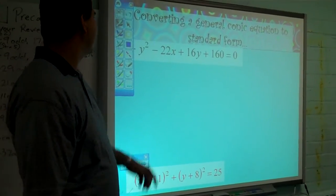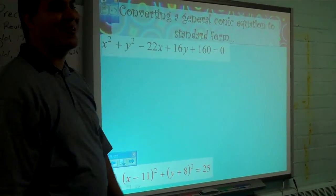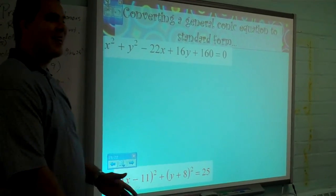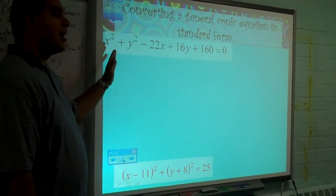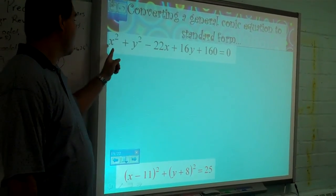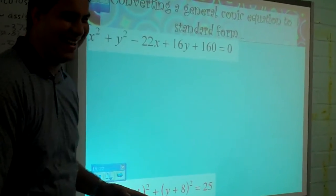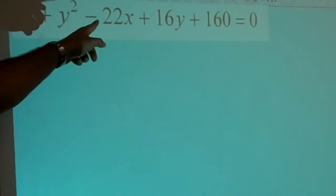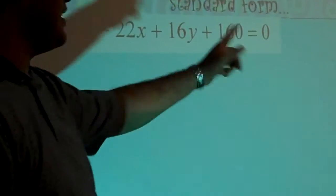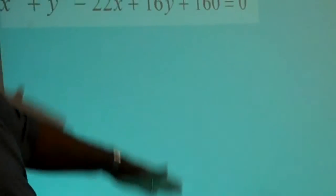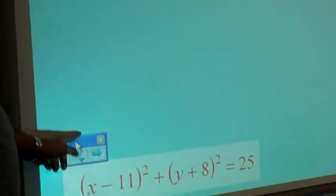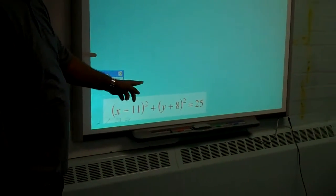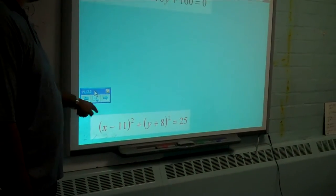Alright, ladies and gentlemen. All of you. Copy down this equation. X squared plus Y squared minus 22x plus 16y plus 160 equals zero. Show me your steps in between, Jesse, to arrive at the standard form. X minus 11 squared plus Y plus 8 squared equals 25.